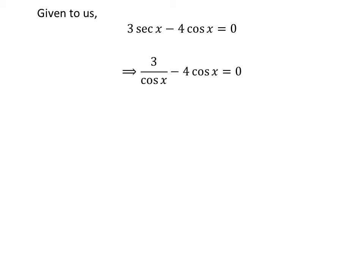We know secant of x is equal to 1 upon cosine of x. So we can rewrite the above statement as 3 upon cosine of x minus 4 times cosine of x is equal to 0. Subtracting the fractions gives us 3 minus 4 times square of cosine of x upon cosine of x is equal to 0.